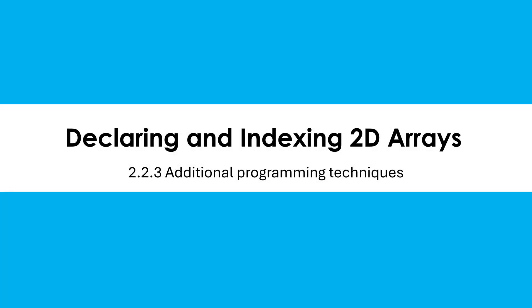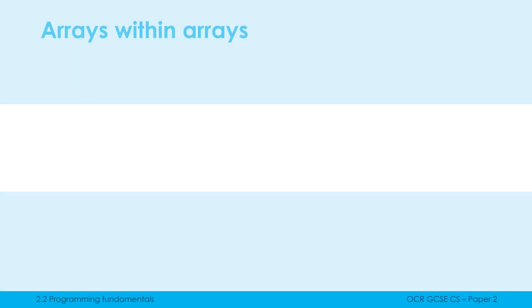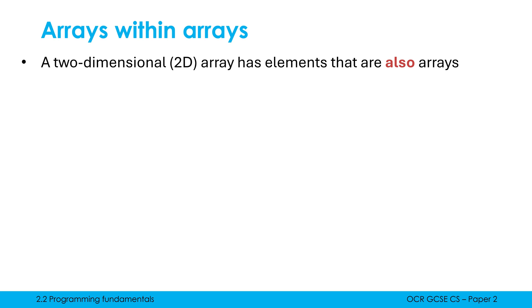We're going to look at what 2D arrays are and how we declare and index them. This is a topic where overthinking can cause problems. If we think of 2D arrays as being arrays within arrays, that really summarizes what a 2D array is. The 2D array, short for two-dimensional, has elements that are also arrays. The arrays we've looked at so far are one-dimensional because each element was an integer or a string, but here the elements are also arrays.